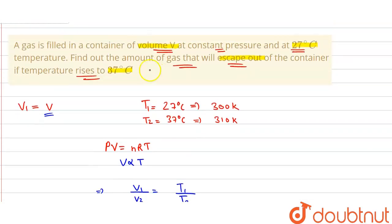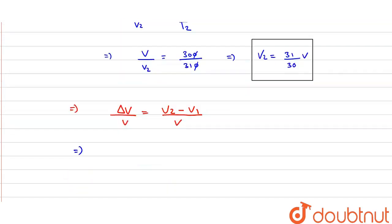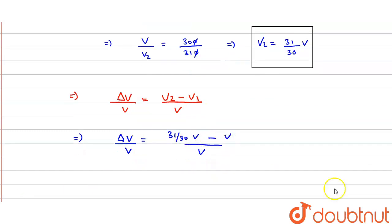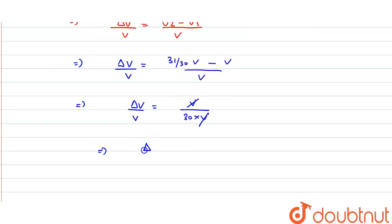Now the question asks us to find the amount of gas that will escape out, which means we need to find delta V. We can write delta V by V as (V2 minus V1) upon V. Putting in the values: delta V upon V equals (31/30 × V minus V) upon V. Simplifying, we get delta V upon V equals 1 upon 30, so the volume that escapes is V upon 30. This is our required answer.